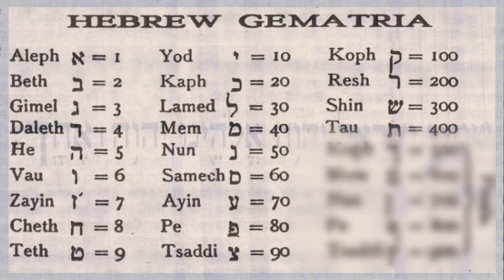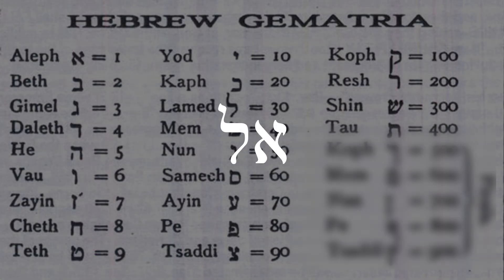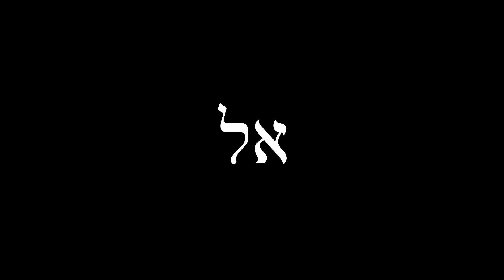Because Aleph is at the head of the alphabet and equal to one, it's often said to be the letter most directly representative of God. El, the first two letters in Aleph, means God in Hebrew.